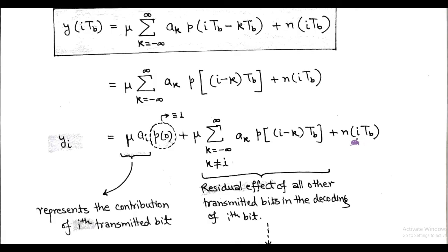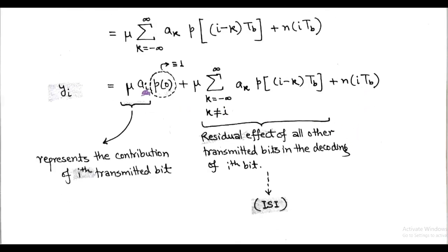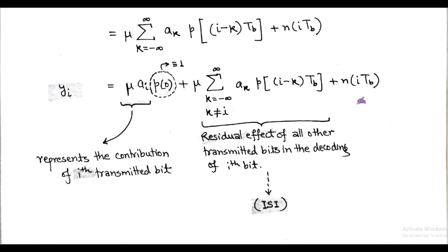Here, the first term μ · a_i represents the contribution of the i·T_b transmitted bit. The second term represents the residual effect of all other transmitted bits (k ≠ i), and this residual effect is called inter-symbol interference. The third term represents the sample noise.